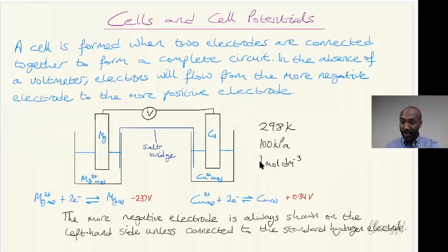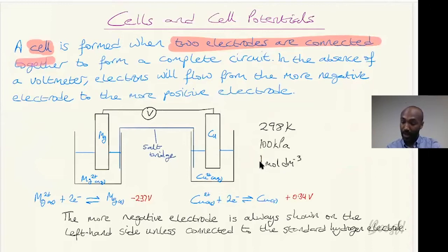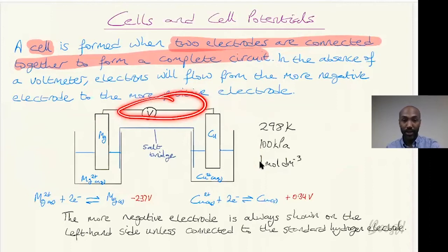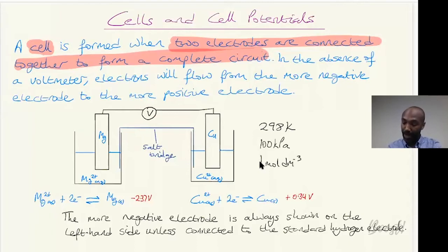When two electrodes are connected together with a conducting wire, a voltmeter, and a salt bridge to form a complete circuit, we have a cell. In the absence of the voltmeter, electrons will flow from the more negative electrode to the more positive electrode. If we connect the magnesium electrode and the copper electrode together, we can measure the cell potential - the potential difference between them.